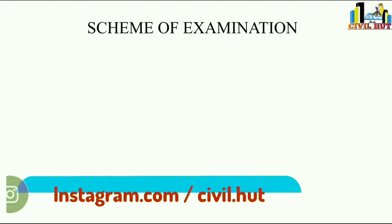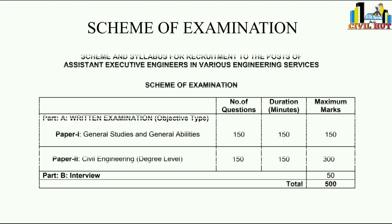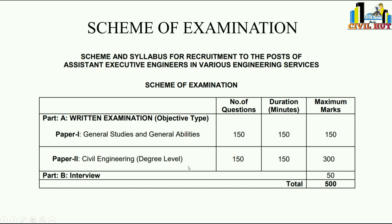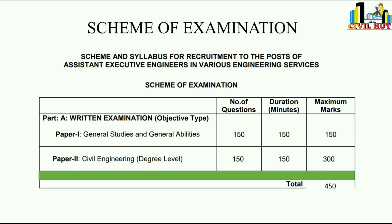Paper 1 is General Studies and General Abilities: 150 questions, 150 minutes, 150 marks — every question carries one mark. Paper 2 is Civil Engineering degree level: 150 questions, 150 minutes, 300 marks — every question carries two marks. Interviews have been removed from upcoming notifications, so total marks are 450.